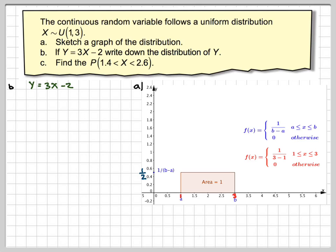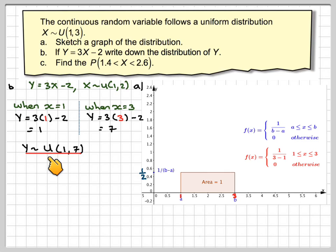If Y is 3X minus 2, write down the distribution of Y. If we take 1, we know where a is 1, so when X is equal to 1 in the Y distribution, we get Y is 3 times 1 minus 2, which is 1. And when X is 3, we get that Y is 3 times 3 minus 2, which is 9 minus 2, which is 7. So Y follows a uniform distribution with a equals 1 and b equals 7.